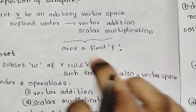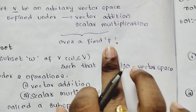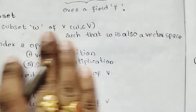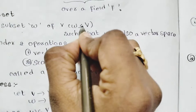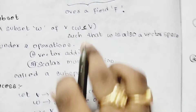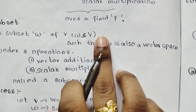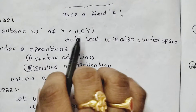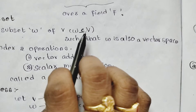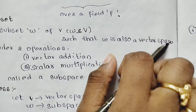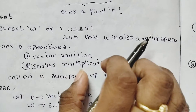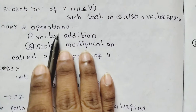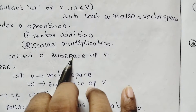It is defined over a field F. A subset is a set which is a part of a vector space. So, omega is also a vector space, and V is also a vector space. Omega is a part of vector space V, and under two operations we will call it a subspace.